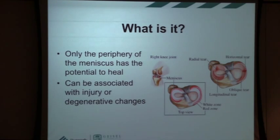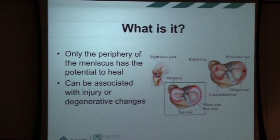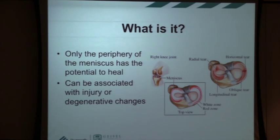The meniscus is interesting because only a certain part of it has the ability to heal on its own. Looking at the cross-section, you can see the meniscus goes from red to white, representing the area that gets blood supply from the outside. Blood vessels live on the outside of the knee and send vessels into the meniscus, but they only make it about halfway. The inside gets nourishment from synovial fluid, and consequently it can't heal because it lacks blood supply to bring the factors needed for healing.